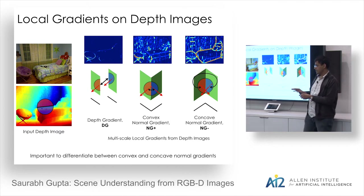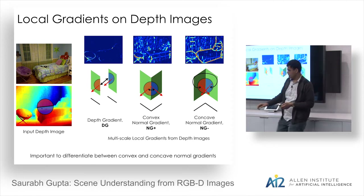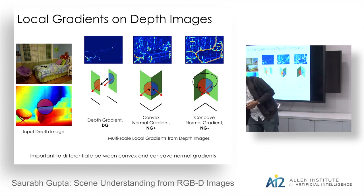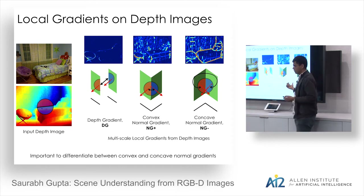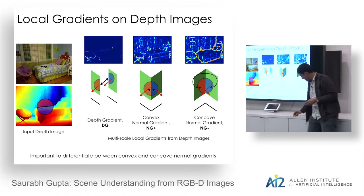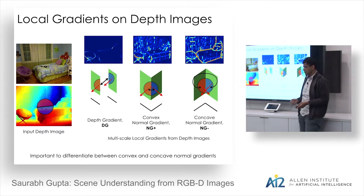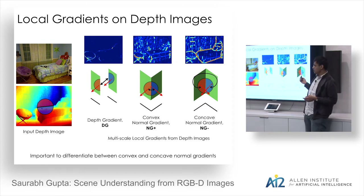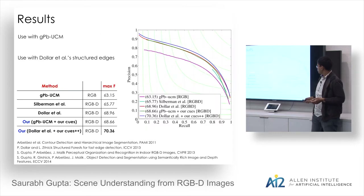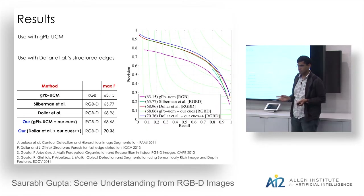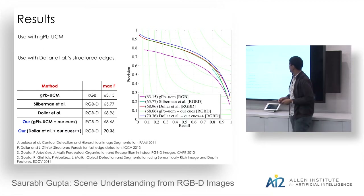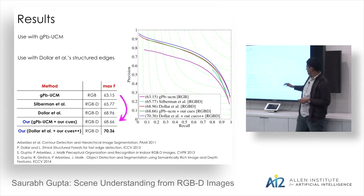It's important to distinguish convex from concave surface normal discontinuities. Concave gradients arise where objects are placed on surfaces, while convex gradients appear at internal contours like the boundary between a counter and shelf. One corresponds to object boundaries and the other doesn't. Once we compute these local gradients, we can plug them into any off-the-shelf contour detector like GPB-UCM or Dollar's structured edges and see performance improvements.